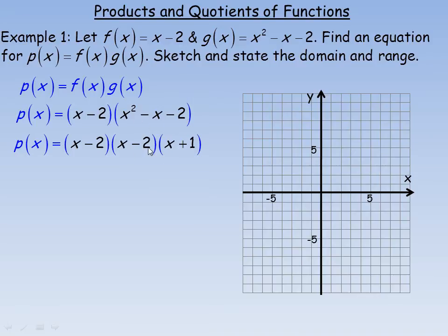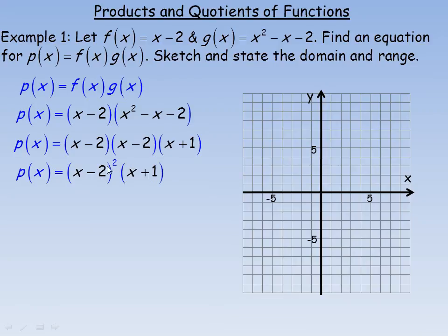So x squared minus x minus 2 factors into x minus 2 times x plus 1 — you can check by expanding. Since x minus 2 appears in both factors, p of x becomes x minus 2 squared times x plus 1. Having a double factor means there is a double root at x equals 2, which tells us something characteristic about the graph.